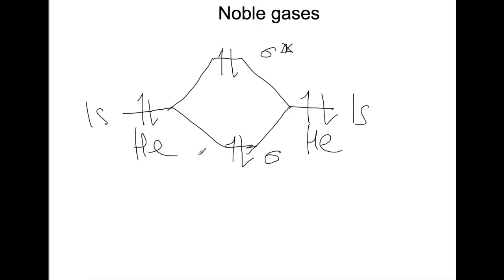If you were to draw this out for any of the noble gases, you would see the same thing happening — you would fill both the bonding and the anti-bonding orbital, which means that we don't have any bonding happening. If you look at this from an energetic point of view, you have two electrons put into a lower energy orbital and two electrons put into a higher energy orbital, but overall energetically this is no different than having them in their original atomic orbitals. Therefore the bonding won't happen.